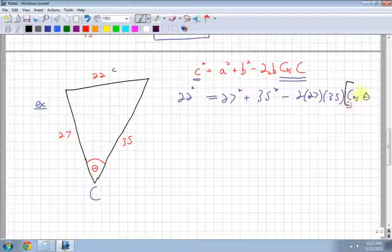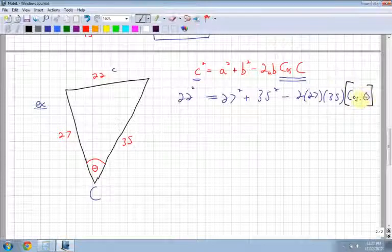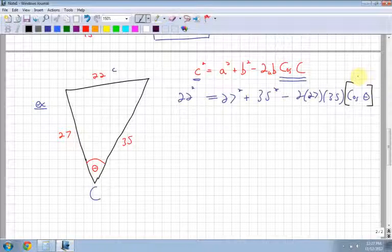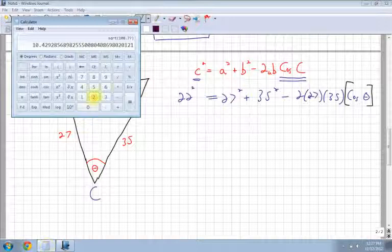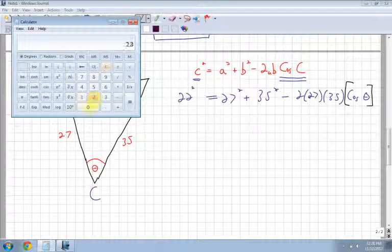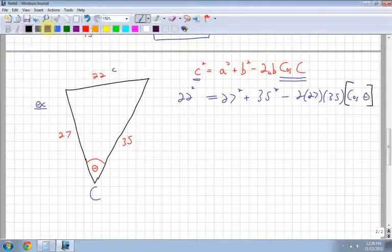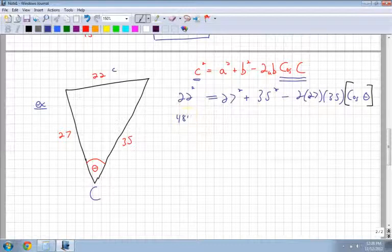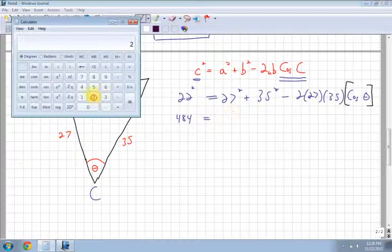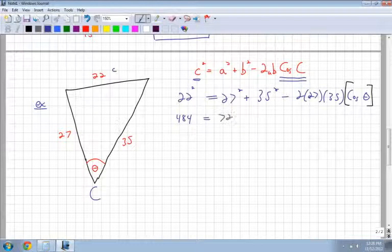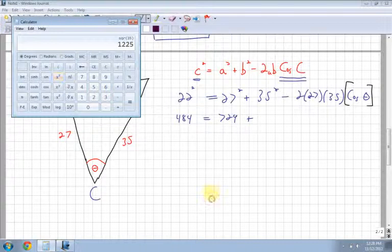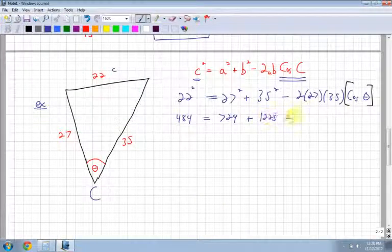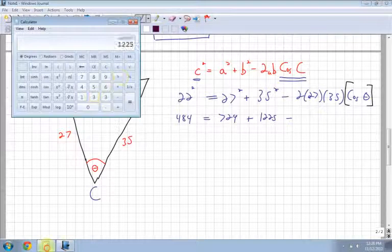Now it's a good idea to think of this cos theta as just a variable because we don't know what it is. You could even call it like a or something but I'm just going to put it in brackets just so you know it's on its own. Now I've got to work through this stuff, right? So 22 squared, let's do that one more time, 22 squared, 484, which is equal to 27 squared, 729, plus 35 squared, which is 1225, minus and then I have all this stuff here, the 2 times the 27 times my 35 which is 1890.